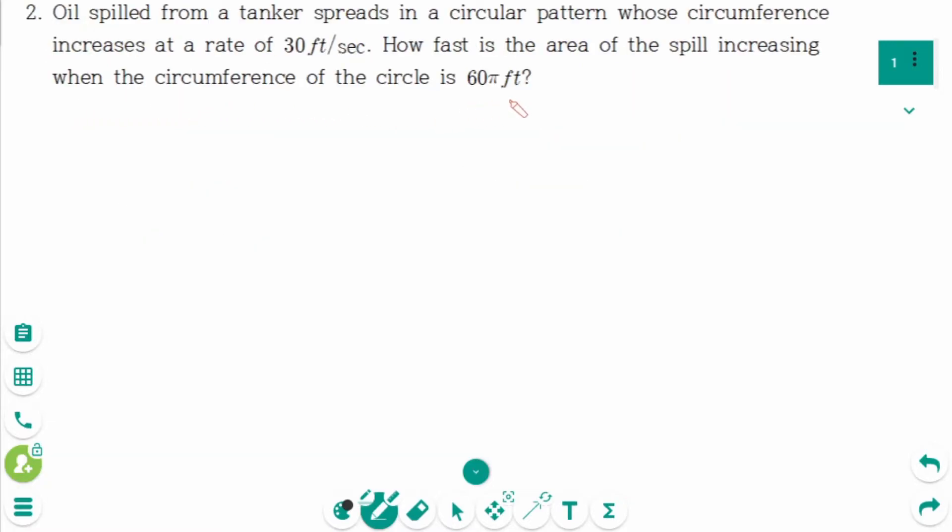This is the second and the last question. The circumference increases at a rate of 30 feet per second. That means dC/dt equals 30 feet per second.